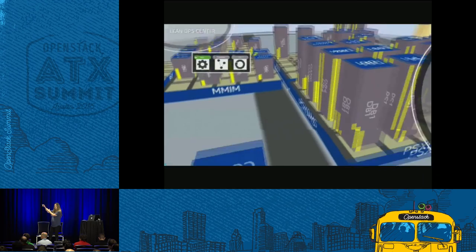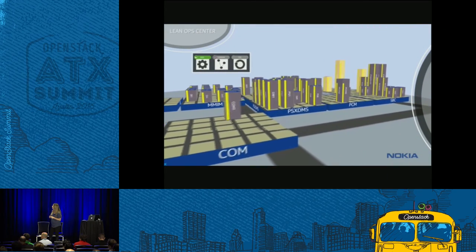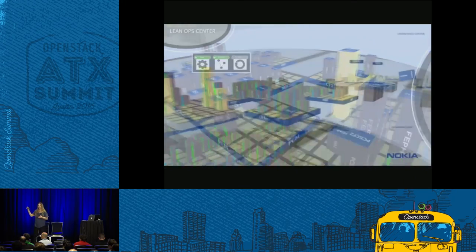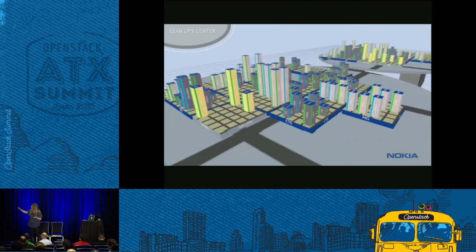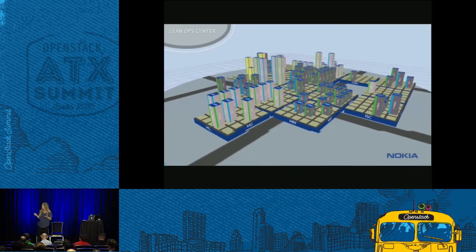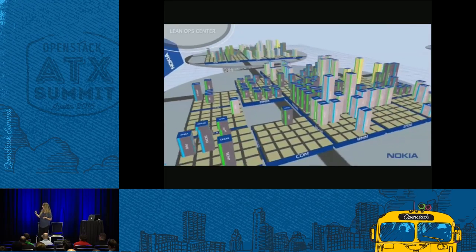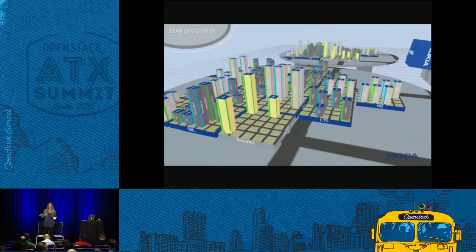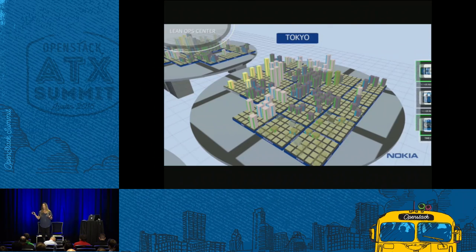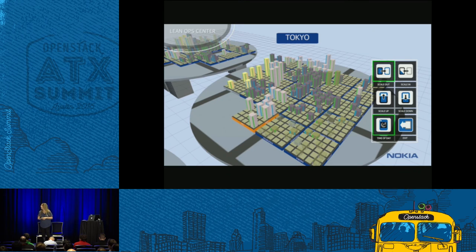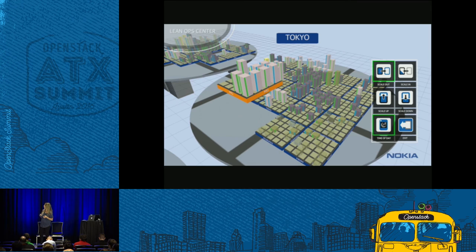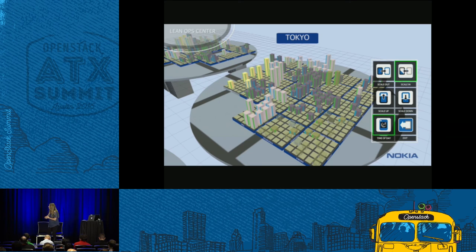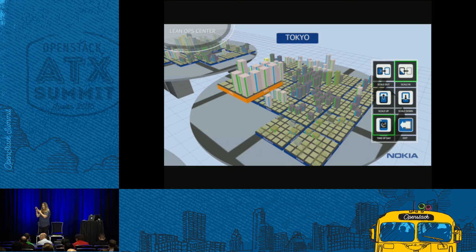Going back up to the city, each one of these cities represents a data center or a cloud environment. In the cities, we have city blocks. Each city block represents a virtual network function or an application. On the city blocks, we have buildings — each building is a virtual machine or an instance, and the variation in size reflects the amount of resources used. In this simulation, we can toggle these resources for the virtual machines between CPU usage, memory, storage, and so on. If you're a network operator with this highly distributed and modular architecture, you're doing application and data modeling, service chaining, orchestration, and so on — and you need the right tools to perform all of these tasks.